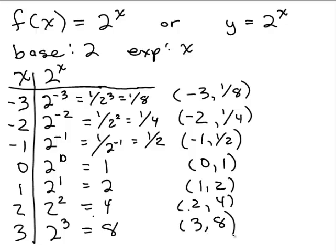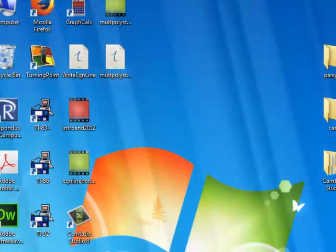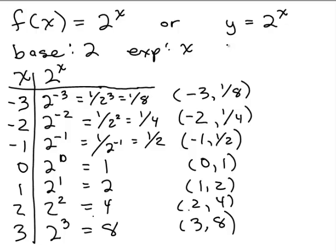Before graphing this, let's think about what the domain and range are going to be. For the domain, it's always all real numbers unless there's some sort of restriction that you can't put in for x. But x is in the exponent and the exponent can be any number. So the domain will be all real numbers, which is negative infinity to infinity.